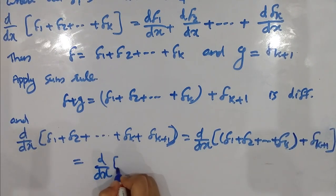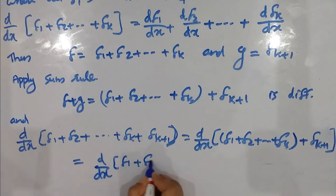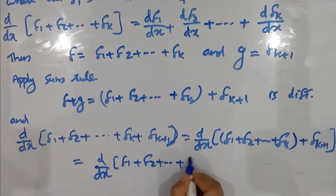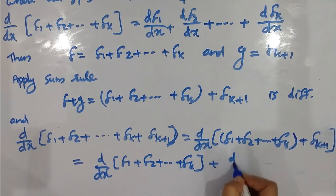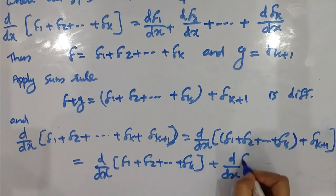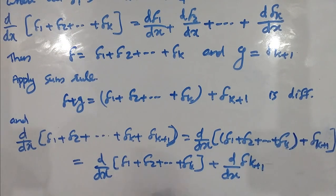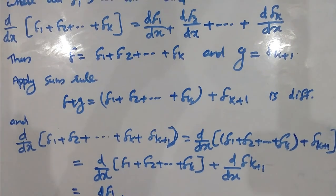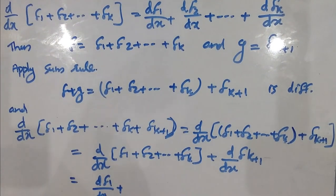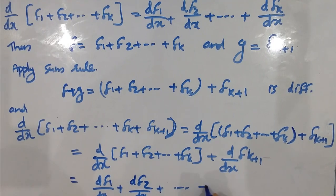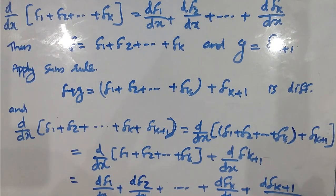The derivative of d by dx of f1 plus f2 plus etc. plus fk plus d by dx of fk plus 1. We split here: df1 by dx plus df2 by dx plus etc. plus dfk by dx plus dfk+1 by dx.